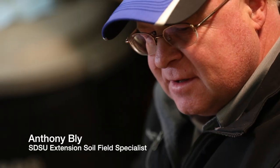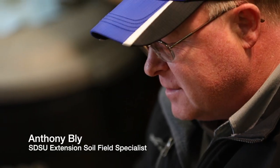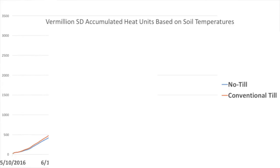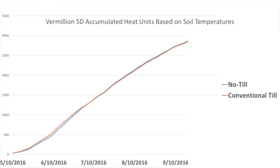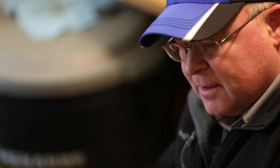We talked to growers about the differences in temperature between management systems and they noticed those differences in the field by the differences in plant growth they see. You calculated those heat units, and I think it shows quite well that by the time the end of the growing season comes around, we've accumulated a similar amount of heat in that soil and that's where it comes out.